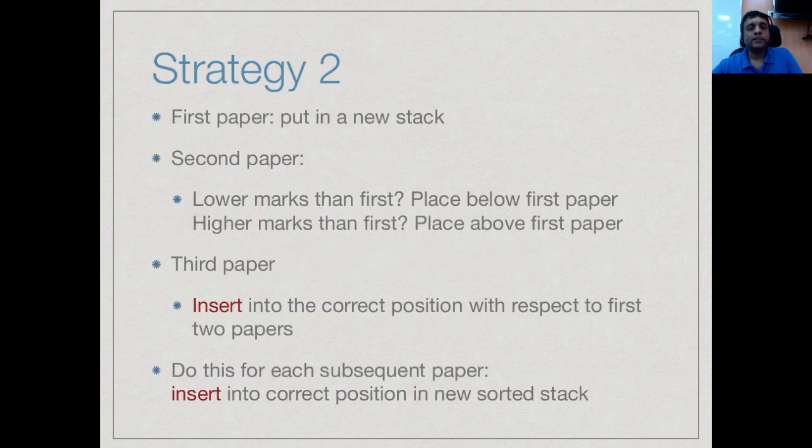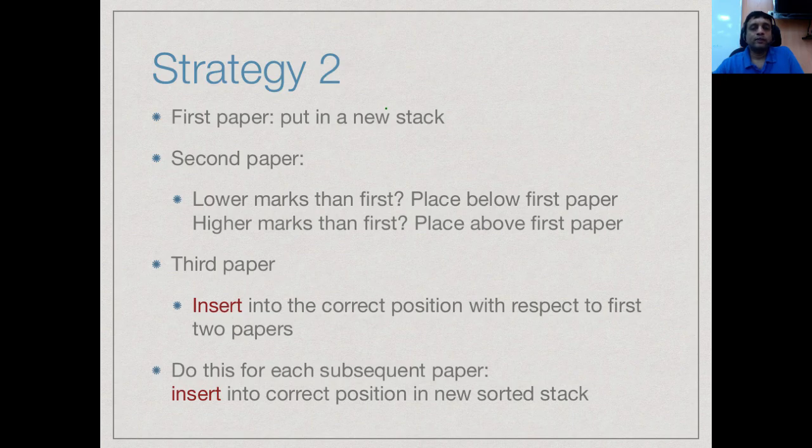A second strategy to sort this bunch of exam papers would be the following. You take the topmost paper in the stack and create a new stack with that. Now you take the second paper and compare it to the first paper. If the mark is bigger, you put it above because you want it in descending order. If the mark is smaller, you put it below. After this step, you have a stack of two papers in descending order. Now you take the third paper and see where it fits with respect to the first two. At each point you pick up the topmost paper in the unsorted stack and insert it into its correct position in the sorted stack that you are building up.